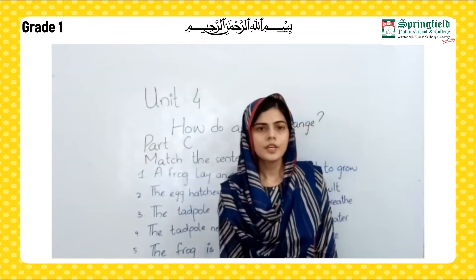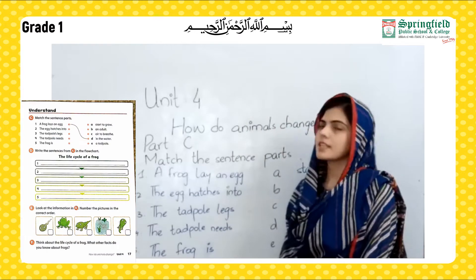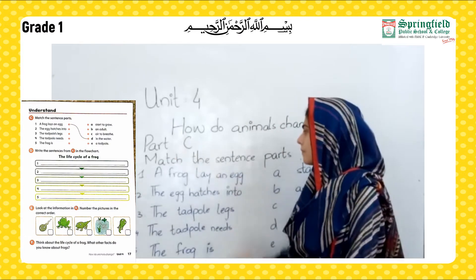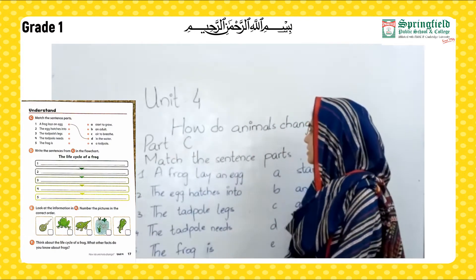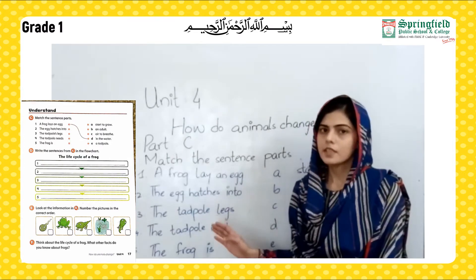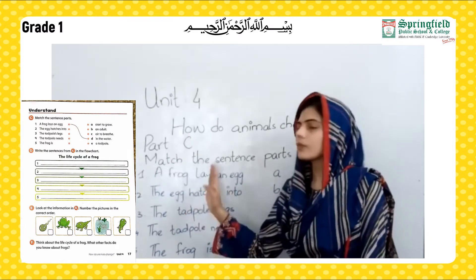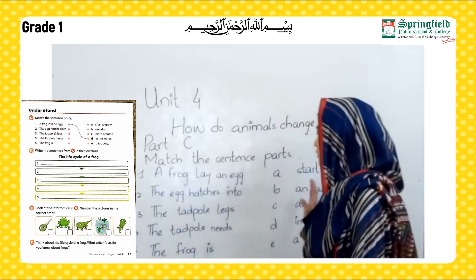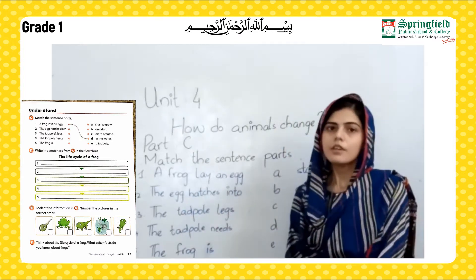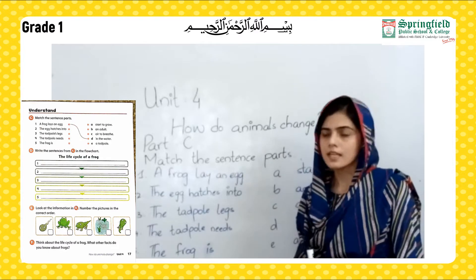So students, now let's move towards our exercise. First part is Part C — match the sentence parts. These are match the columns. At one side we have been given half a statement, and at the other side we have been given the other half. We have to match the appropriate statements to make a whole sentence.